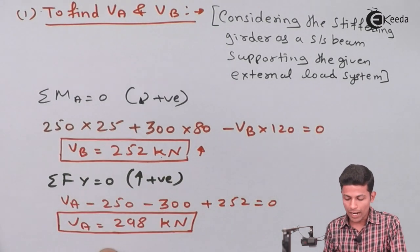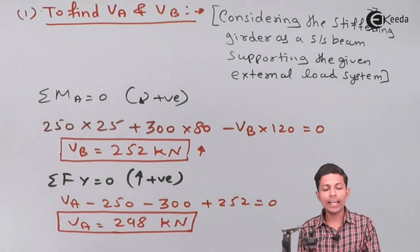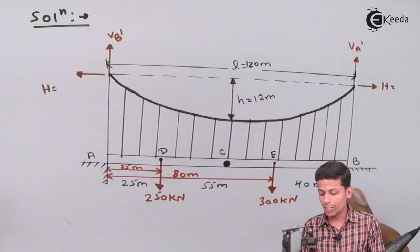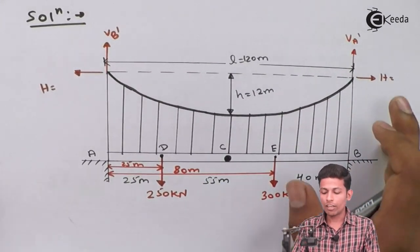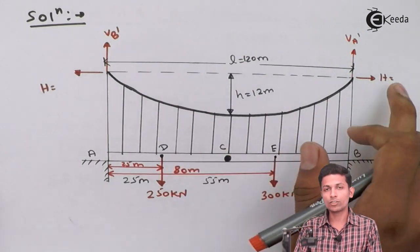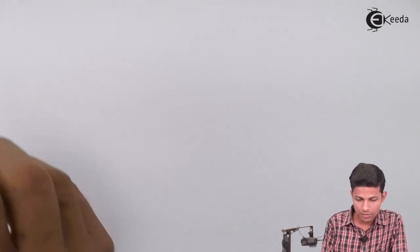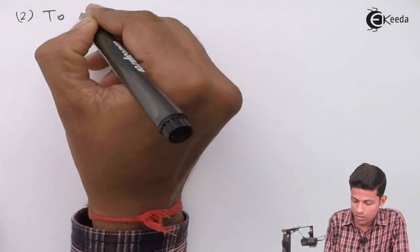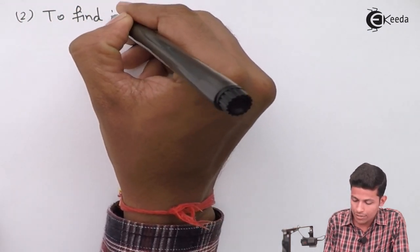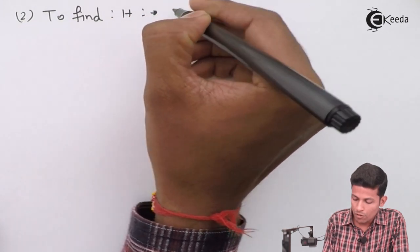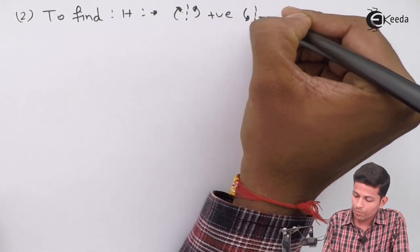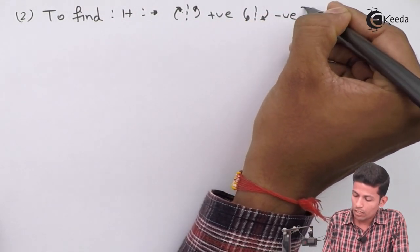We have now completed Step 1 finding VA and VB. Moving to Step 2: Find H. Note that H is not found for a simple beam — we find H for an arch or cable. To find H, we use the sign convention: sagging is positive, hogging is negative. We take the bending moment at the center of the span.